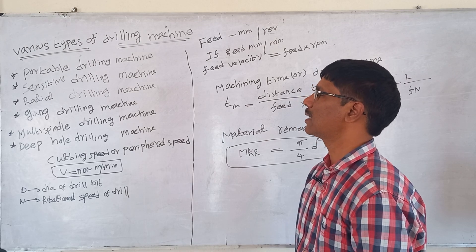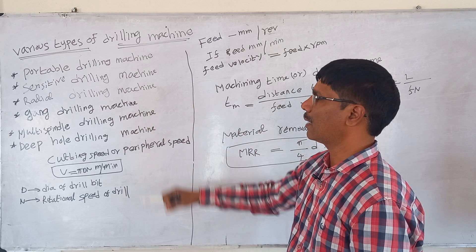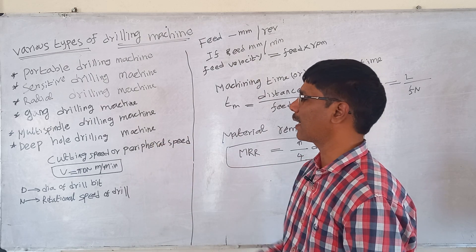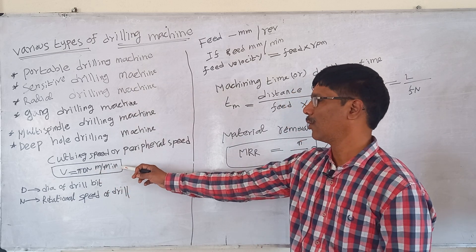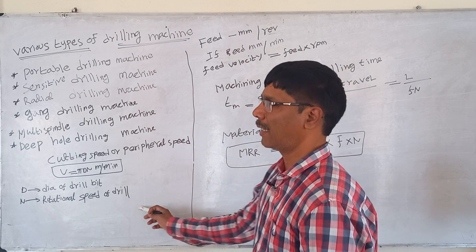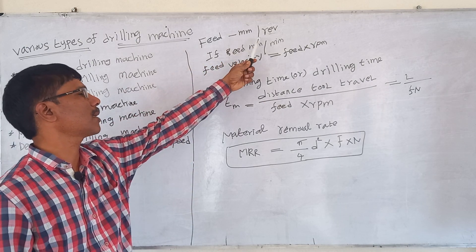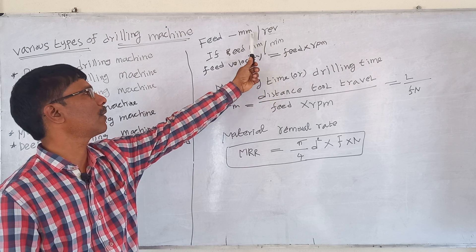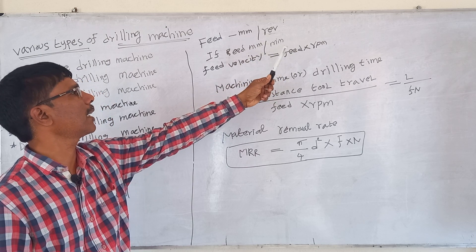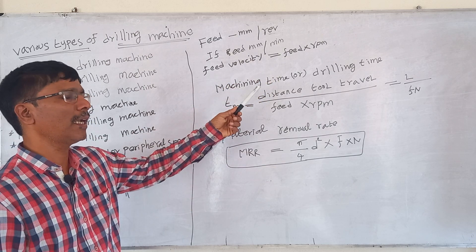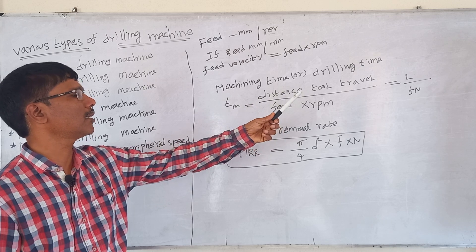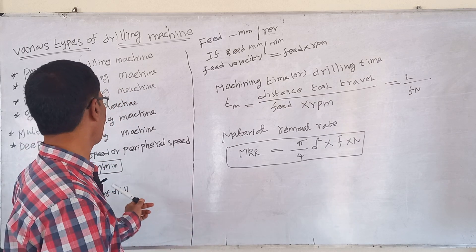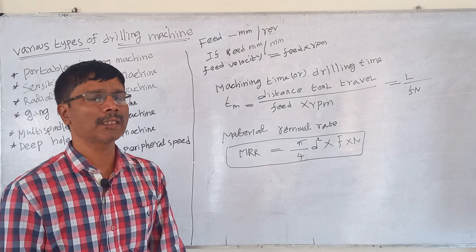Types of drilling machines include: floor drill, sensitive drilling machine, radial drilling machine, gang drilling machine, multi-spindle drilling machine, and deep hole drilling machine. Cutting speed or peripheral speed is calculated using V = πdn, in meters per minute, where d is the diameter of the drill bit and n is the rotational speed. Feed velocity equals feed (mm/rev) multiplied by rpm, giving mm per minute. Machining time equals tool travel distance divided by feed rate: T = L / (f × n). Metal removal rate is MRR = (π/4) × d² × f × n.